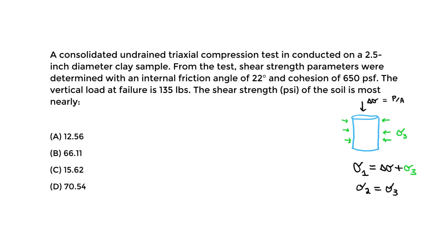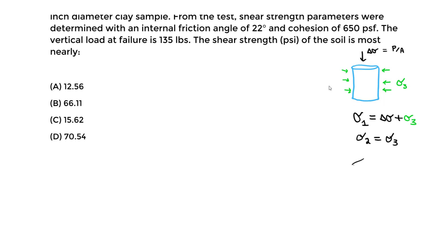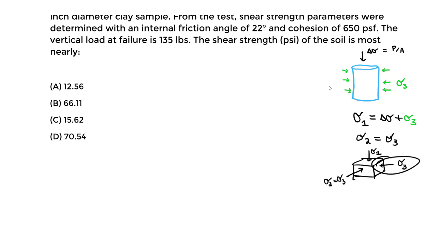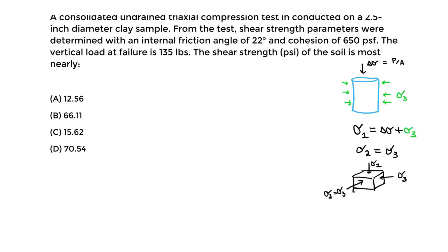Specifically for a triaxial test, looking at a 3D cube, we have sigma 1 as the major, sigma 3 as the minor, and sigma 2 which equals sigma 3. When analyzing the triaxial test, we mostly work in 2D, focusing on sigma 1, the major principal stress, which is always bigger than sigma 3, the minor. That's why it's triaxial — sigma 1, sigma 2, sigma 3.